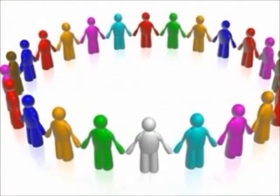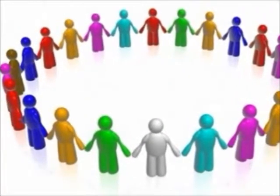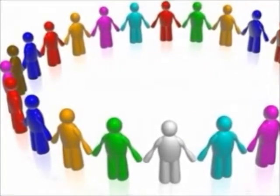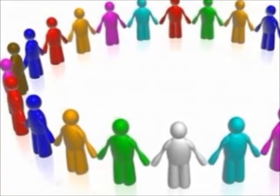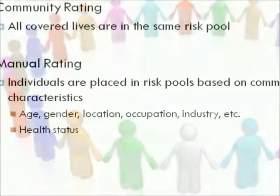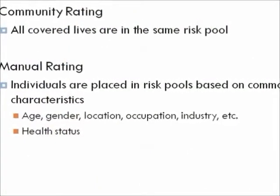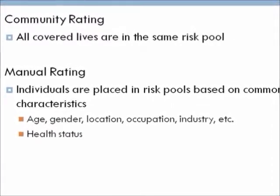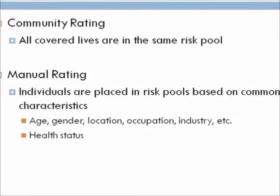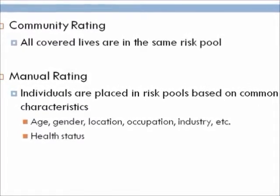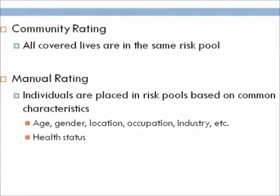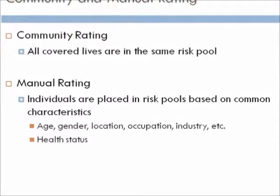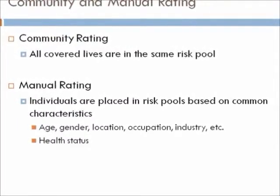Community rating is when all people in a society or community are in the same pool and the premium is calculated for the whole community as a whole. A common mistake is calling manual rating community rating. Manual rating calculates premiums based on individual characteristics such as age, gender, location, occupation, industry, or health status.